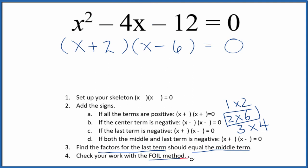Let's check our work with the FOIL method. We multiply the first, outside, inside, and last. And when we combine negative 6x and 2x, we get negative 4x. So that's good.